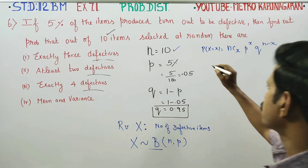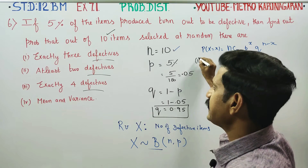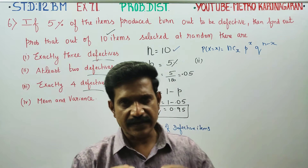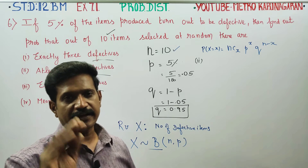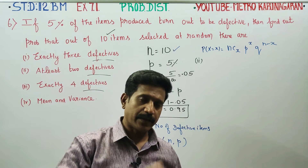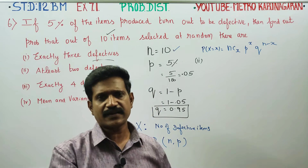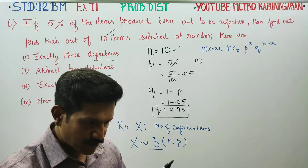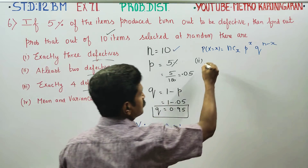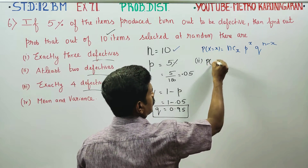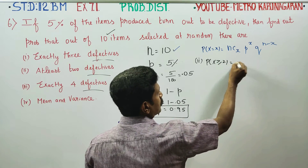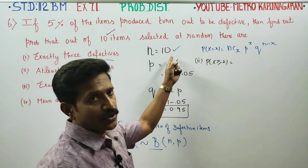The second subdivision is at least two defectives. At least two means x can be 2, 3, 4, 5, 6, 7, 8, 9, or 10. Since this involves many terms, we use the complement method: P(X ≥ 2) equals 1 minus P(X < 2), that is 1 minus [P(X=0) plus P(X=1)].